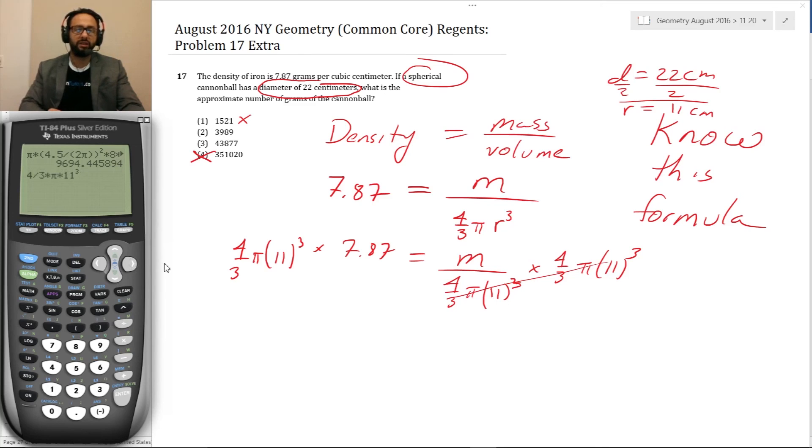Now when I see 11 cubed, I should know that the density can 11 cubed is 11 times 11 times 11 is over a thousand. And then we'll multiply by a bunch of other numbers. So 7.87 times 7.87. And we get 43,000. So M is equal to 43,00877.5. Okay. So that is a choice three.